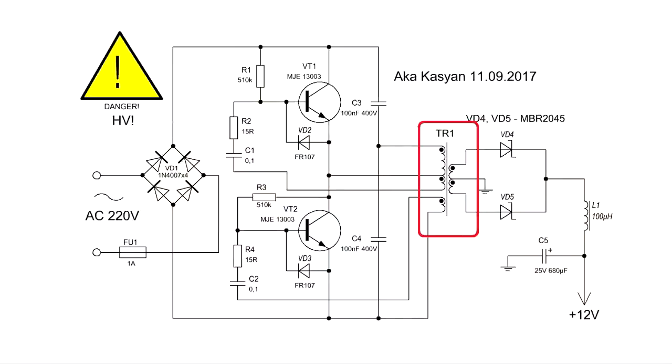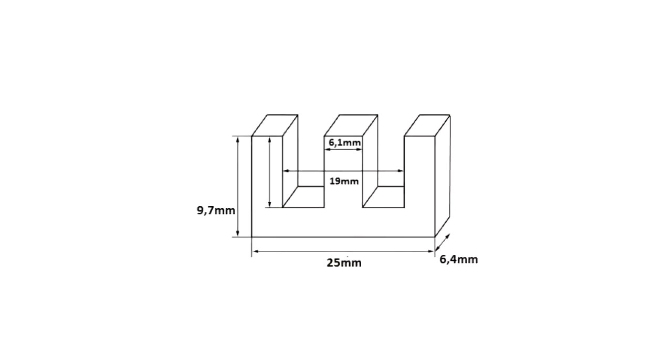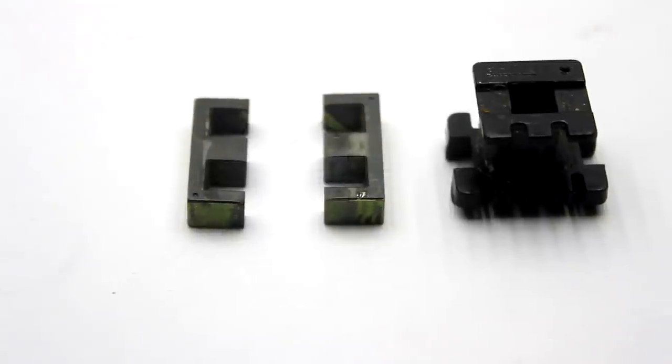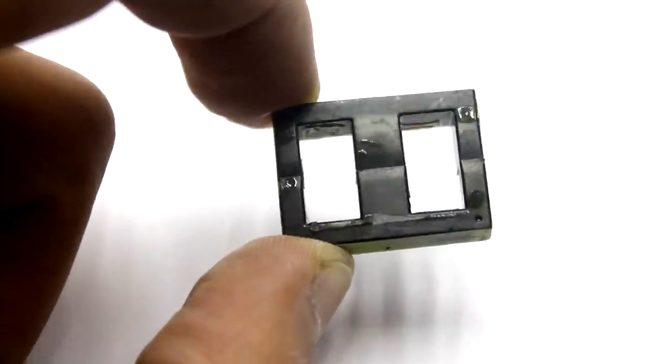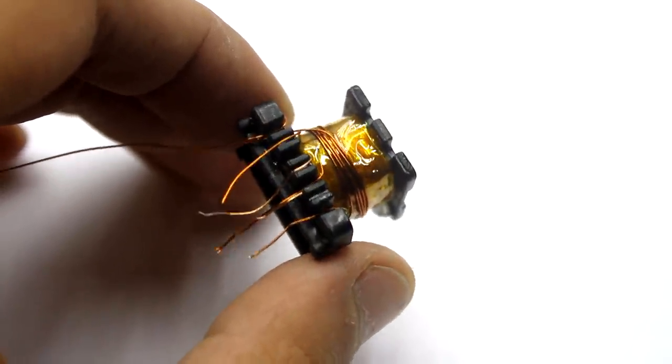The transformer is the hardest part of this circuit. The size of the core I used is now in front of you. Since the circuit is push-pull, the core half shouldn't have any gaps. It is very important to remember and follow the winding sequence.